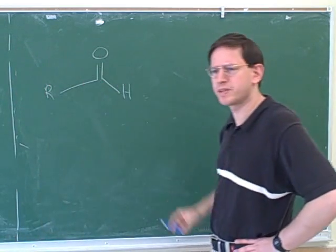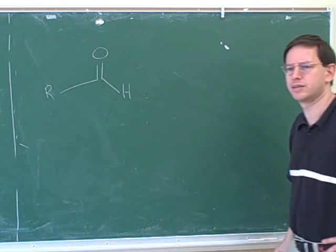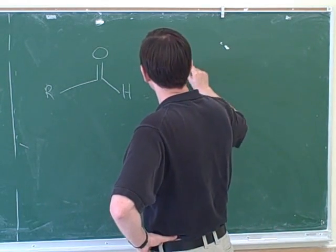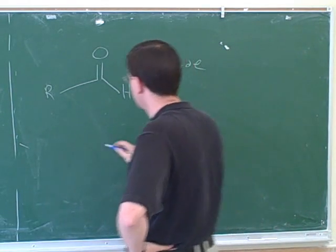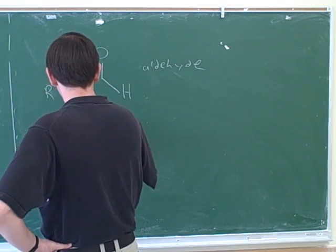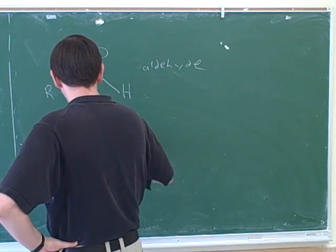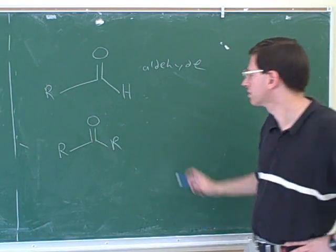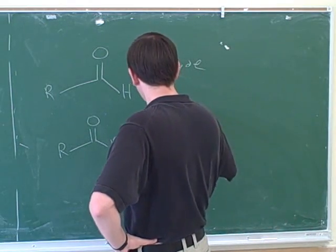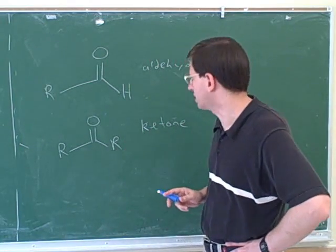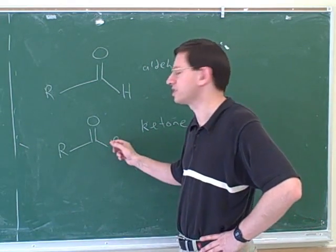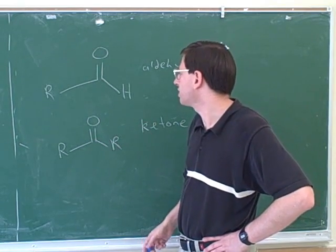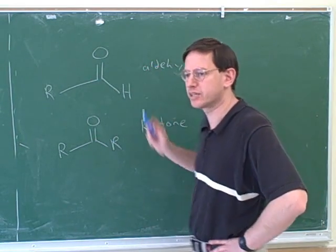Do you know what type of functional group this is? That is an aldehyde. Correct. What type of functional group would this be? A ketone. If we have a carbonyl oxygen connected to two carbon chains, that would be a ketone. But with only one carbon chain, that would be an aldehyde.